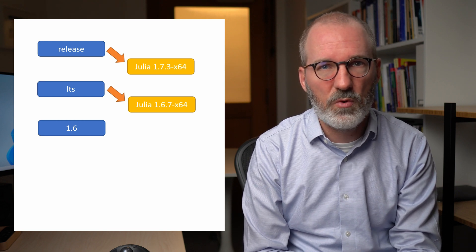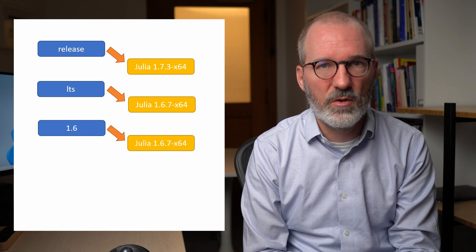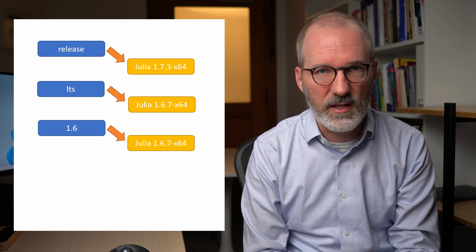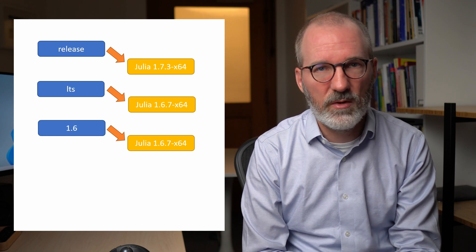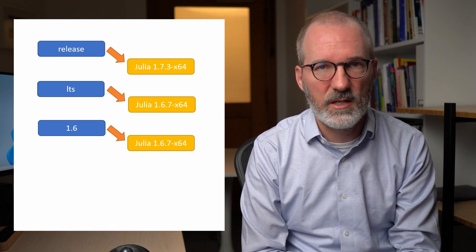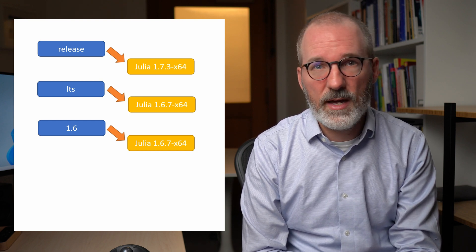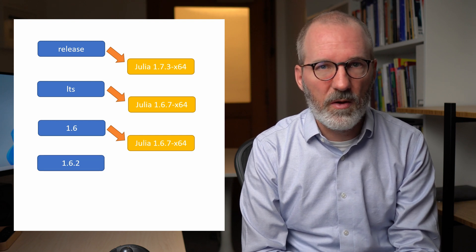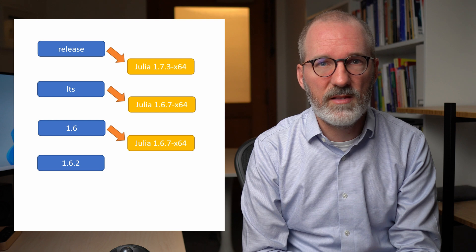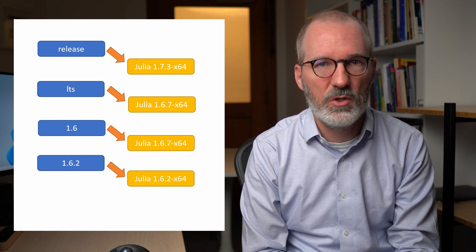There are channels for minor versions of Julia. So there's, for example, a channel called 1.6 and the 1.6 channel will always point to the latest 1.6 release. So at the moment that would be 1.6.7. But if there's another patch release in the 1.6 series, then the 1.6 channel would point to that new version. There are channels for specific Julia versions. So here's an example of Julia 1.6.2. That's a channel and that will point exactly to Julia version 1.6.2.